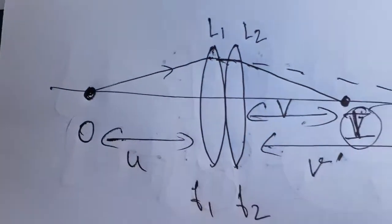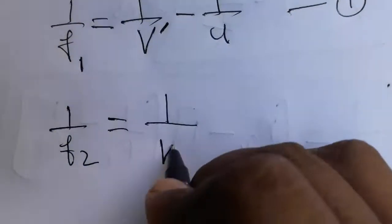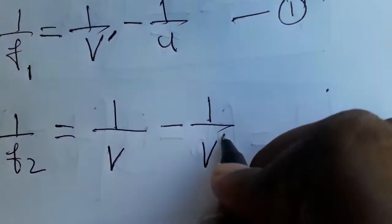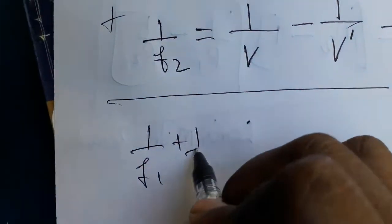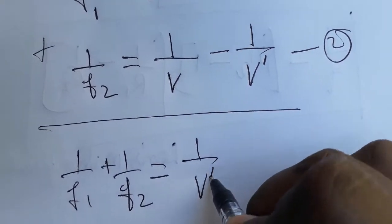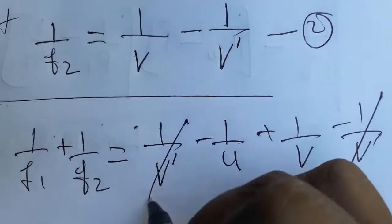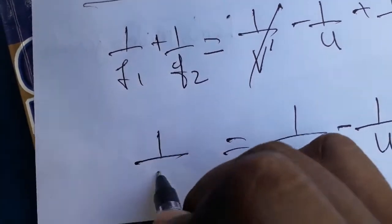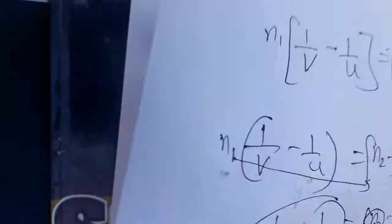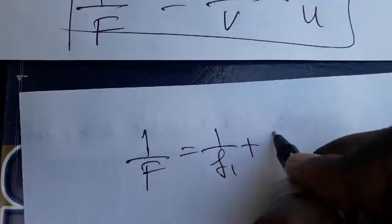For the second lens, the image distance is v and the object distance is v-dash. This gives equation 2. Adding both equations: 1/f1 + 1/f2 = 1/v-dash − 1/u + 1/v − 1/v-dash. The 1/v-dash terms cancel, giving: 1/v − 1/u = 1/f1 + 1/f2. Taking this as the total combined focal length, the combined focal length formula is: 1/f = 1/f1 + 1/f2.